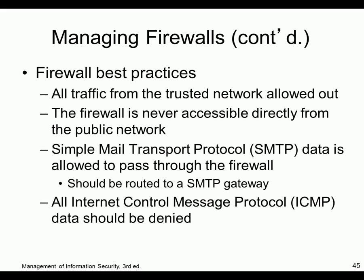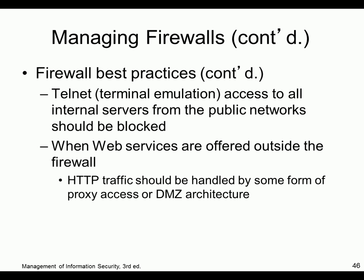Best practices: all traffic from the trusted network should be allowed out. Firewalls should never be accessible from the public network — you don't want someone configuring it from outside. SMTP is allowed to pass through to a mail server. ICMP should be denied — block pings because they can be used for denial of service. Telnet access to internal from the public should be blocked. Web servers should be in a DMZ architecture — allow web traffic to a specific location only.